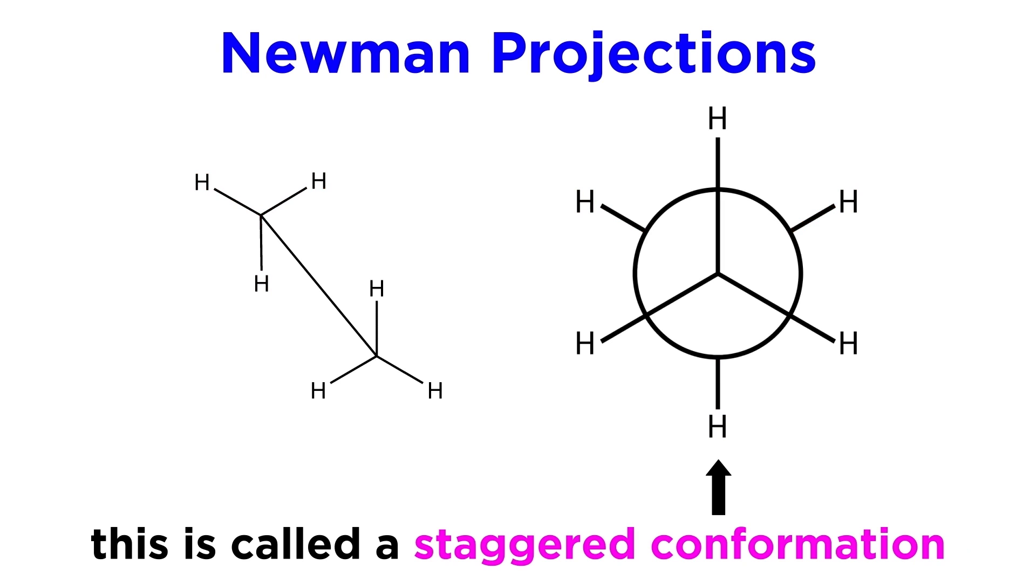This is called a staggered conformation. The dihedral angle, or the angle between a CH bond on the front carbon and the next CH bond on the back carbon, is 60 degrees.